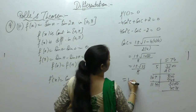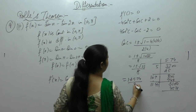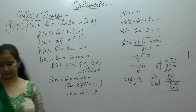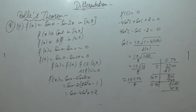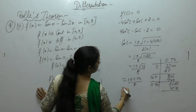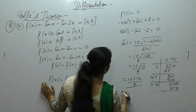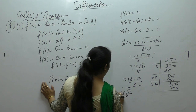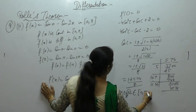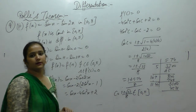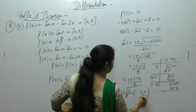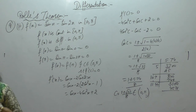So cos c = (1 ± 5.74)/8, giving values approximately 0.843 or -0.593. These values for cos c yield angles c that lie in [0, π]. Therefore c belongs to (0, π) and Rolle's theorem is verified.